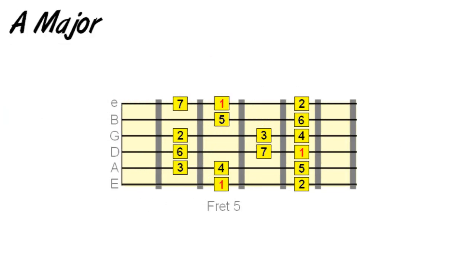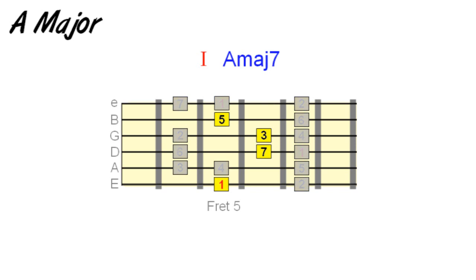Here we have our parent scale — I'm using A major this time, since the root is on A. You'll probably already know that these scale patterns are moveable depending on the key in which you're playing. Starting on its first degree, the root of the scale, we can create its first degree chord: A major seventh. As you can see, the intervals of the major triad are there, plus a major seventh interval. You can also see how the chord shape has been pulled straight from the scale pattern.